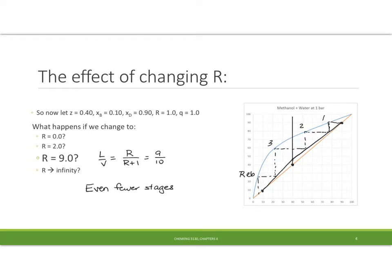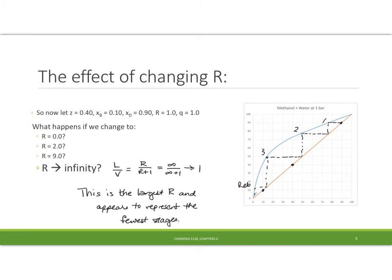At R=9 the slope is 9 tenths and I get even fewer stages. Notice how it's coming in and it's approaching that Y equal X line. But notice now if I go to R equal to infinity, L over V approaches the value of 1. I can't let R go any larger than that, so therefore this is going to be a limiting value. And this value here seems to give me the fewest possible stages.